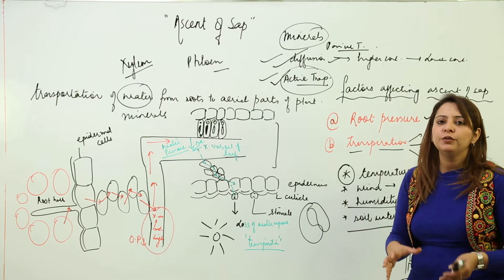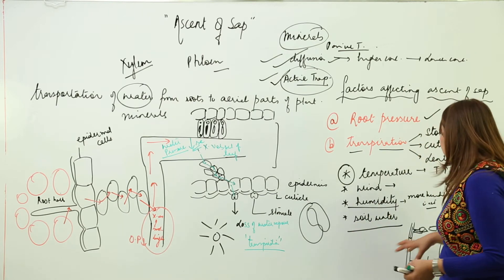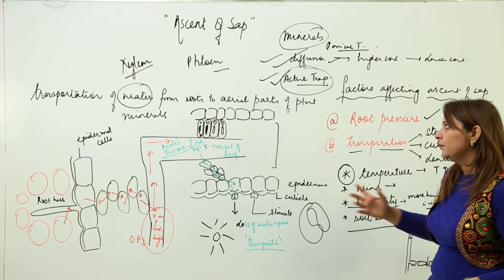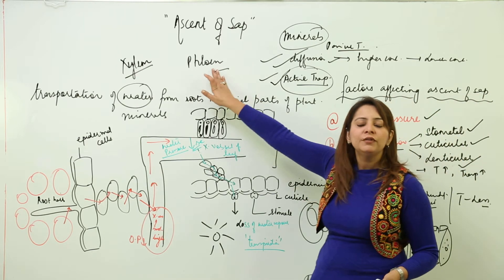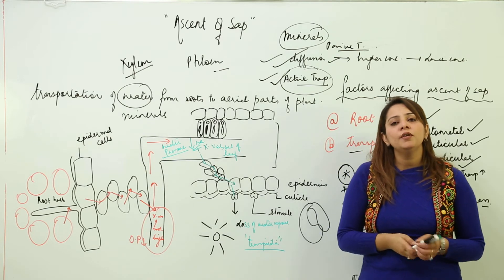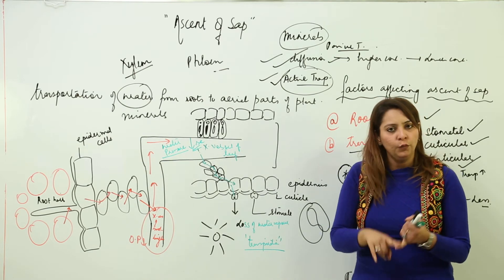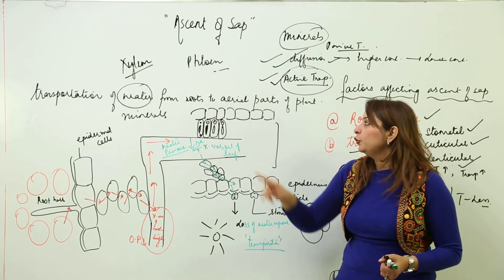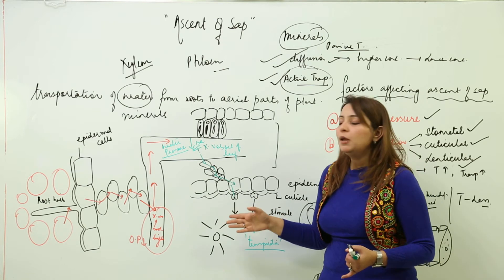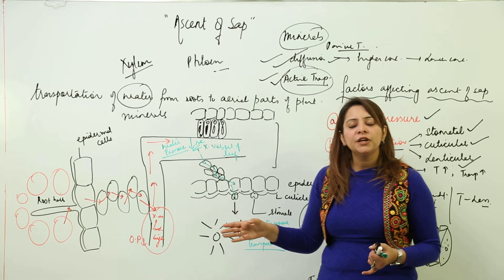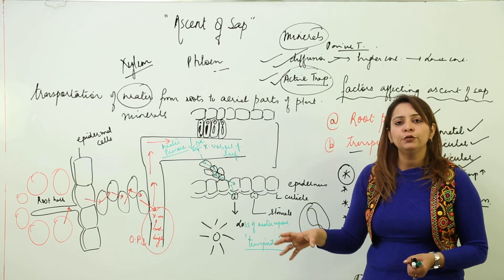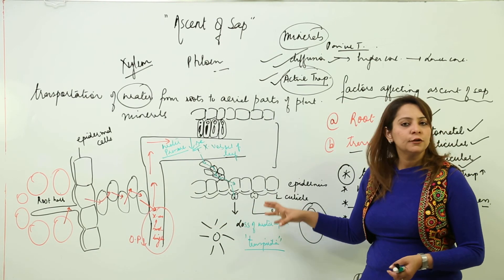Food formed in the leaves diffuses into sieve plates through pits, moves into sieve tubes, and since the sieve tubes are interconnected throughout the plant, food is translocated from the leaf to all plant parts equally. Xylem is involved in the transportation of water and minerals, while phloem is involved in the translocation of food. This completes the topic of transportation of water, minerals, and food in plants.